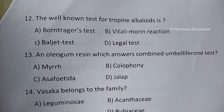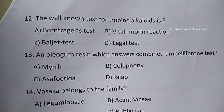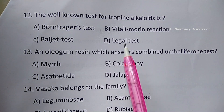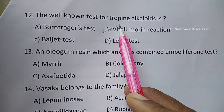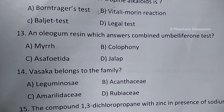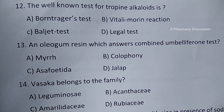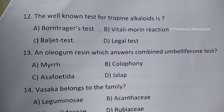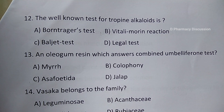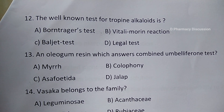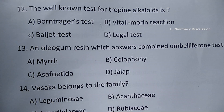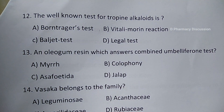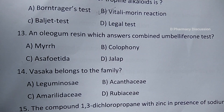Question number 12: the well-known test for tropine alkaloids. Options are A. Bontrager's test, B. Vitali-Morin reaction, C. Baljet test, and option D. Legal test. Correct answer is option B, that is Vitali-Morin reaction. Bontrager's test or anthraquinone test is used for drugs containing anthraquinones like senna, rhubarb, and cascara.